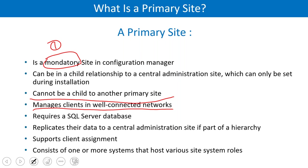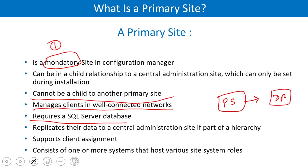Devices located in branch offices connected over a WAN network cannot be managed efficiently by the primary site alone — a secondary site is needed for those. The primary site also requires a SQL database. If a Central Administration Site exists, it sits on top and the primary reports to it, with database replication between them.